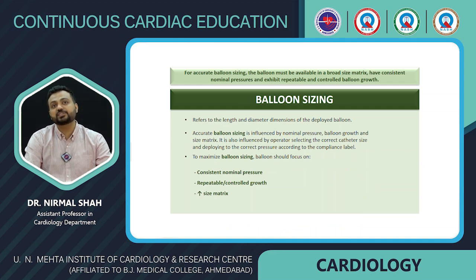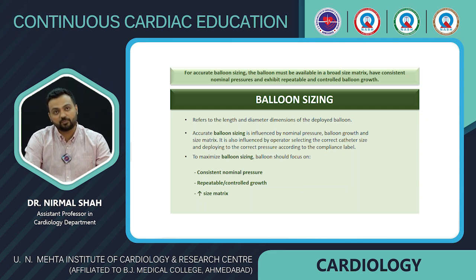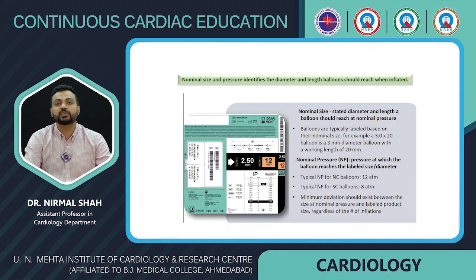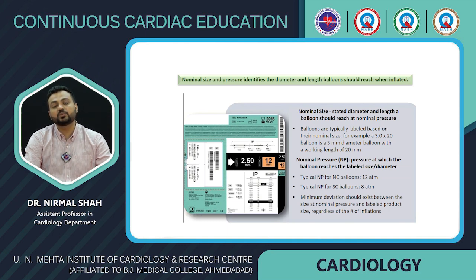Balloon sizing refers to the length and diameter dimensions of the deployed balloon. Accurate balloon sizing is influenced by nominal pressure, balloon growth, size matrix, and the operator selecting the correct catheter size and deploying to the correct pressure according to the compliance label. To maximize balloon sizing, balloons should focus on consistent nominal pressure, repeatable controlled growth, and an increased size matrix. The compliance chart on the back of the balloon package always mentions nominal pressure and rated burst pressure.